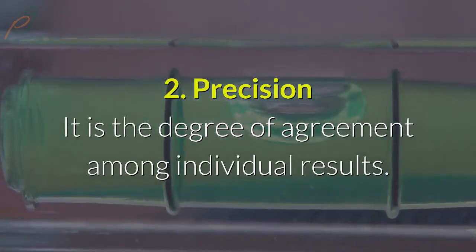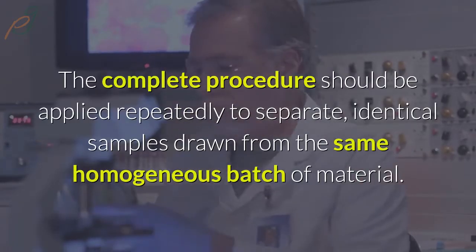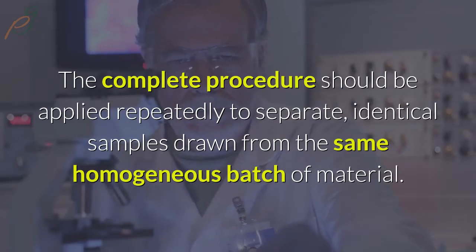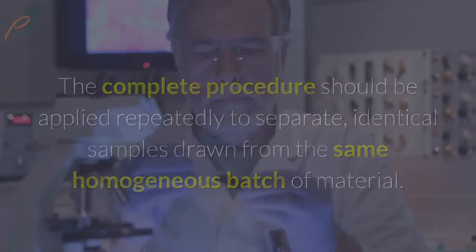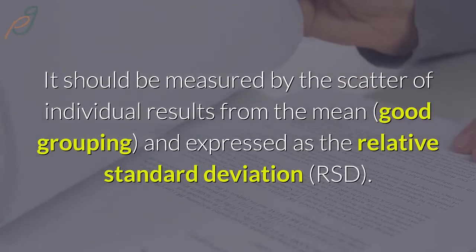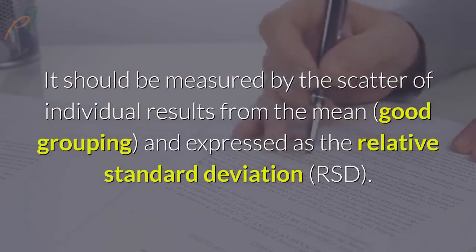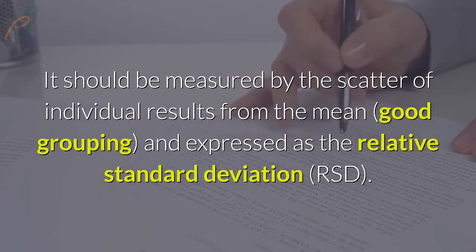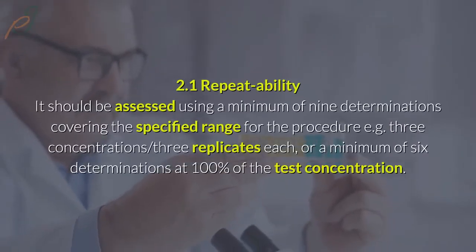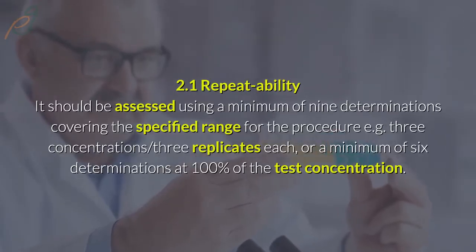2. Precision: It is the degree of agreement among individual results. The complete procedure should be applied repeatedly to separate identical samples drawn from the same homogeneous batch of material. It should be measured by the scatter of individual results from the mean, and expressed as the relative standard deviation (RSD).